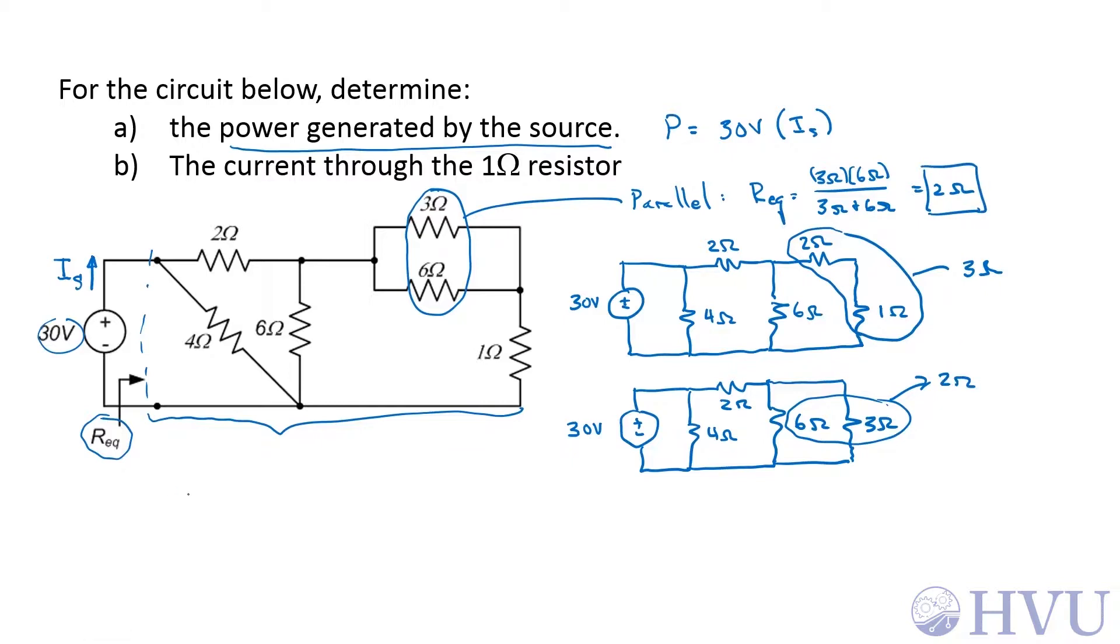My next circuit becomes: these two 2 ohm resistors are in series, that becomes 4 ohms. That 4 ohms is in parallel with that 4 ohms, so the equivalent resistance Req